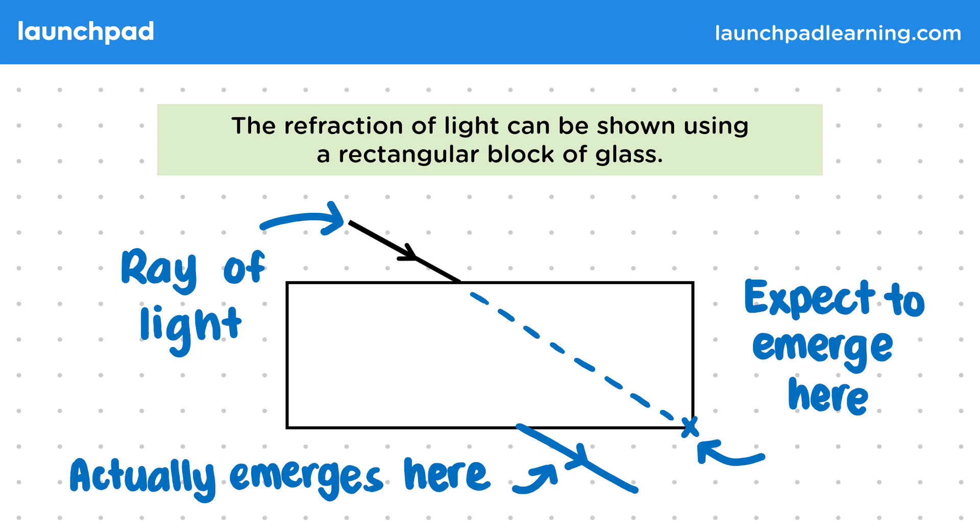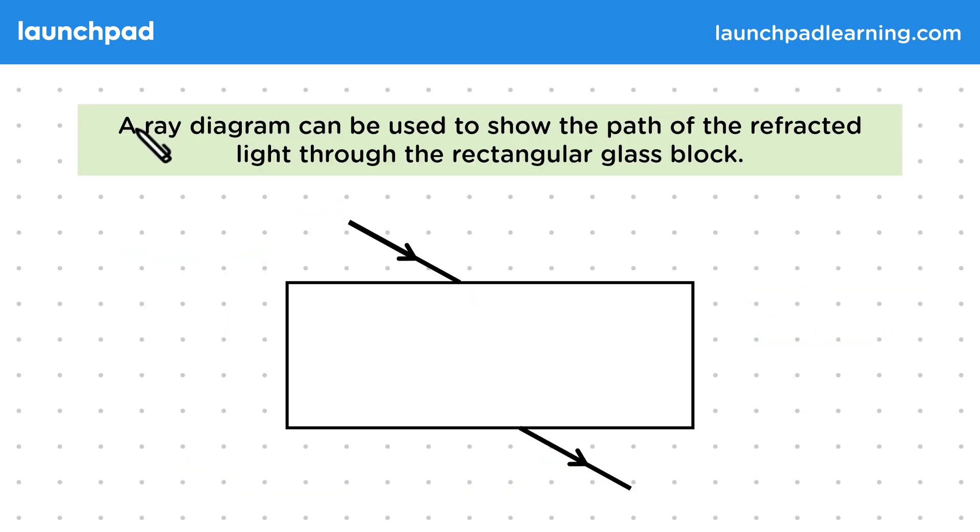But how should we show what's happening inside the block? A ray diagram can be used to show the path of the refracted light through the rectangular glass block.